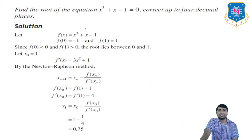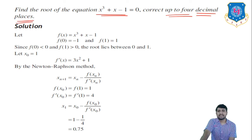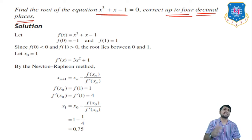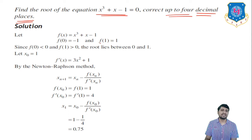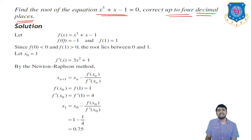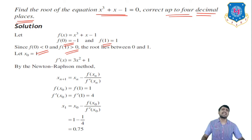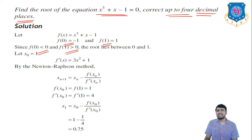Let's solve an example: find the root of x³ + x − 1 = 0, correct to four decimal places, using the Newton-Raphson method. So f(x) = x³ + x − 1. f(0) = −1 and f(1) = 1, so the root lies between 0 and 1. For Newton-Raphson we need only one approximation x0. You can take x0 = 0.5, or x0 = 1 — it is not fixed. Here we take x0 = 1.